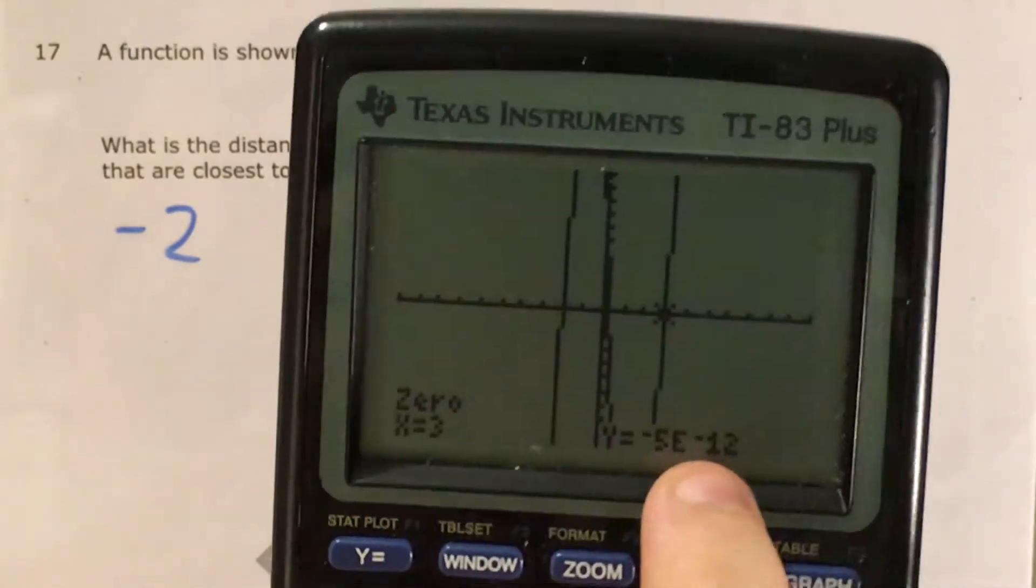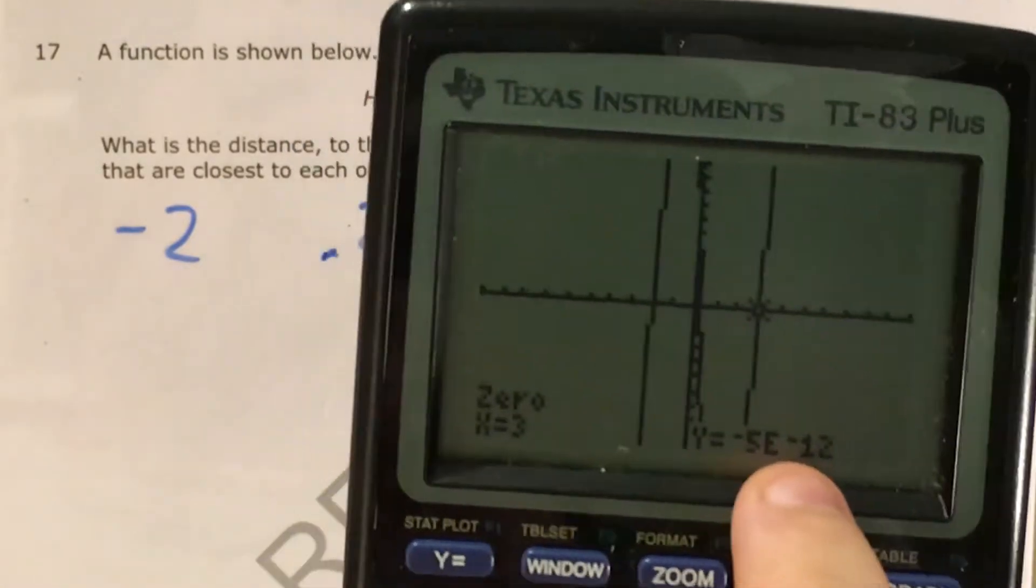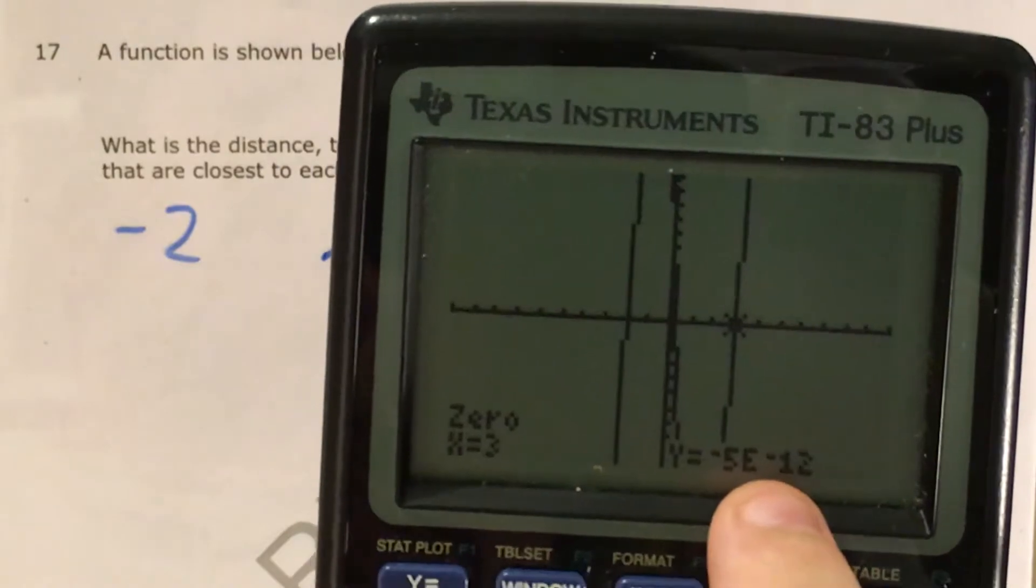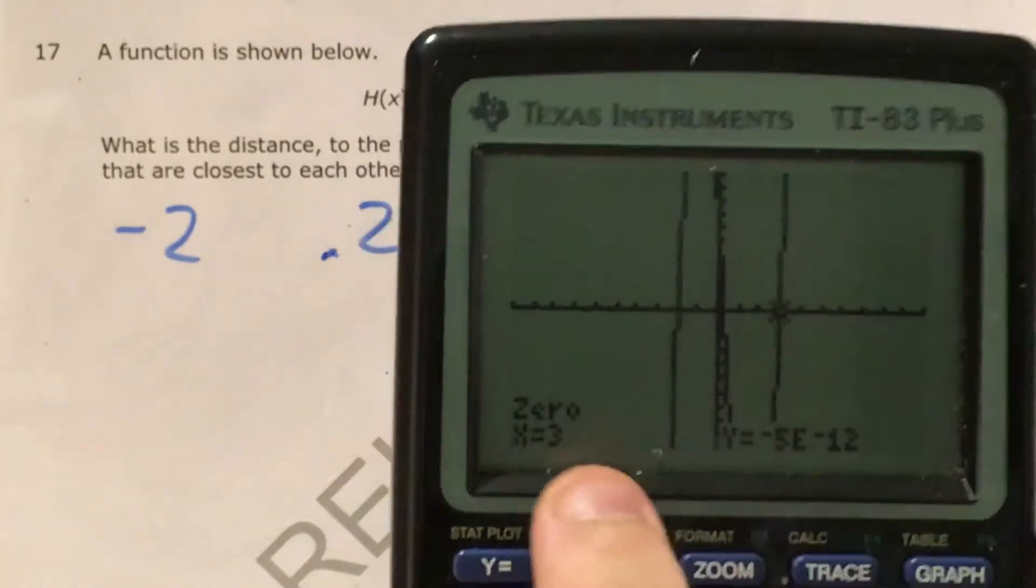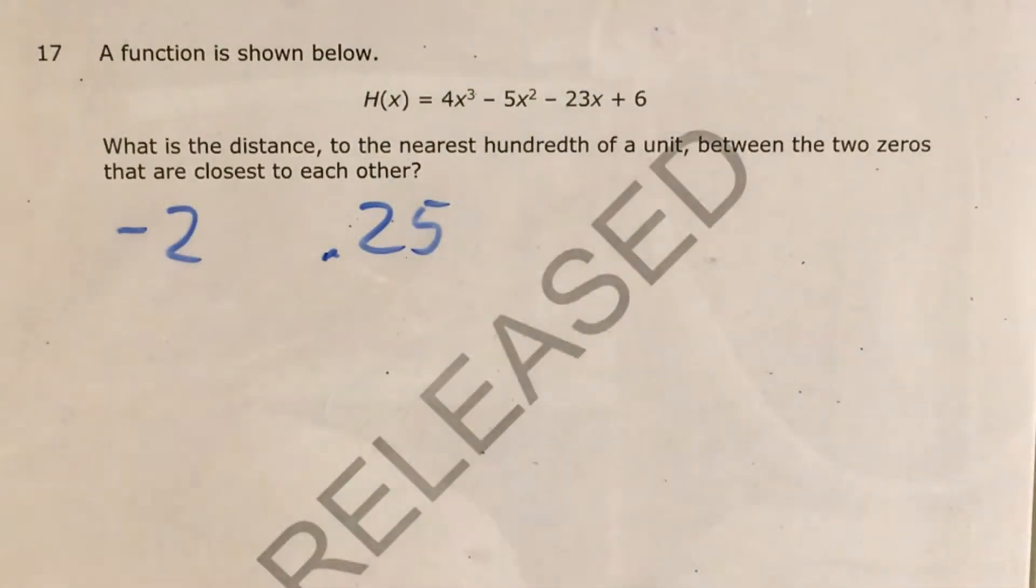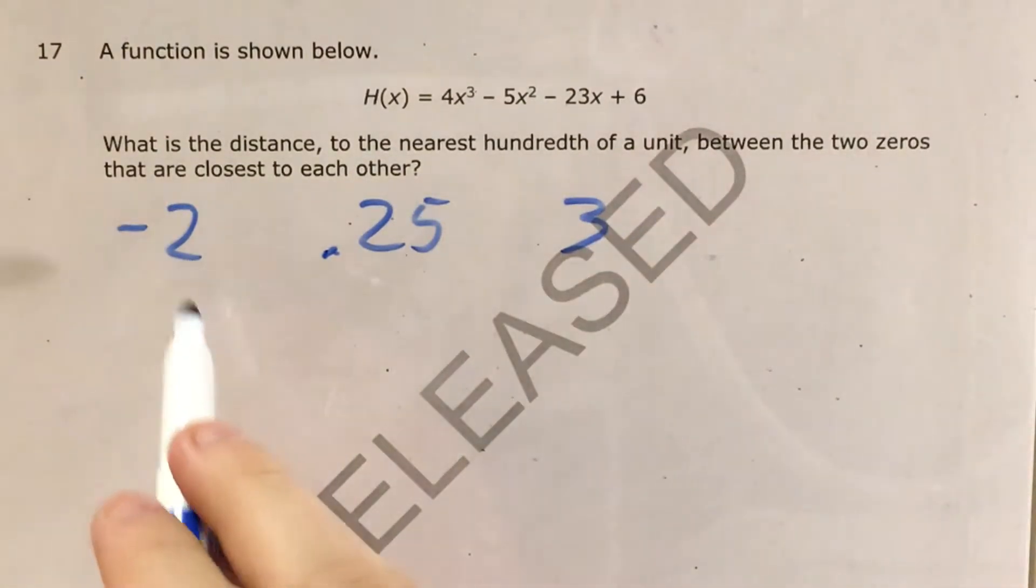This thing here, the calculator does this sometimes. This just means the calculator got such a tiny number that we can assume it's just zero. So our x is 3.